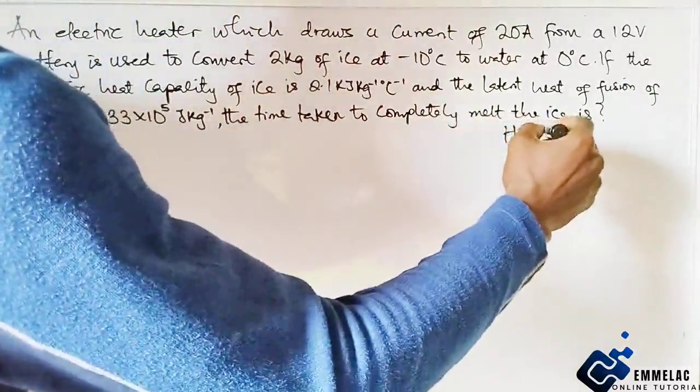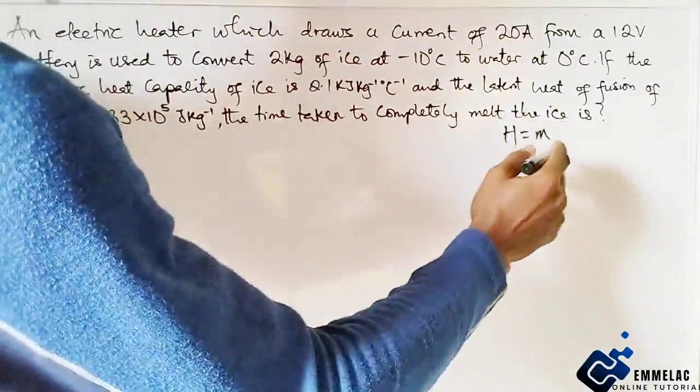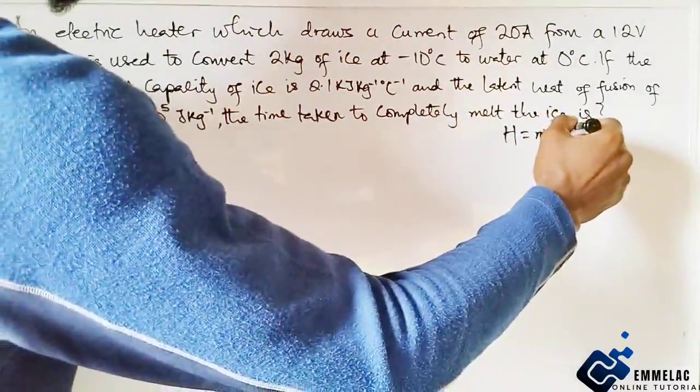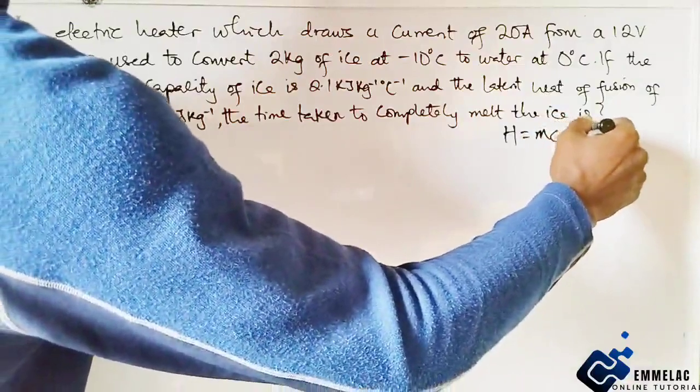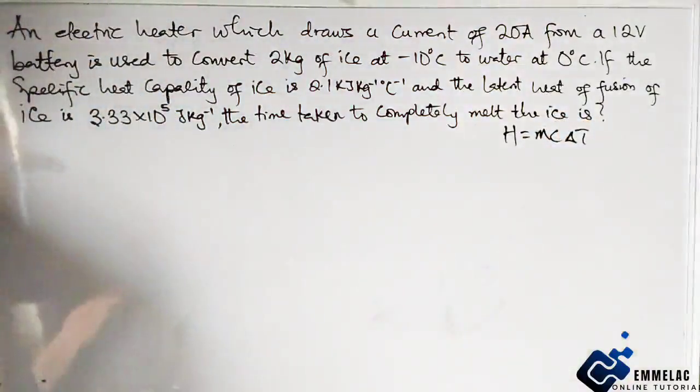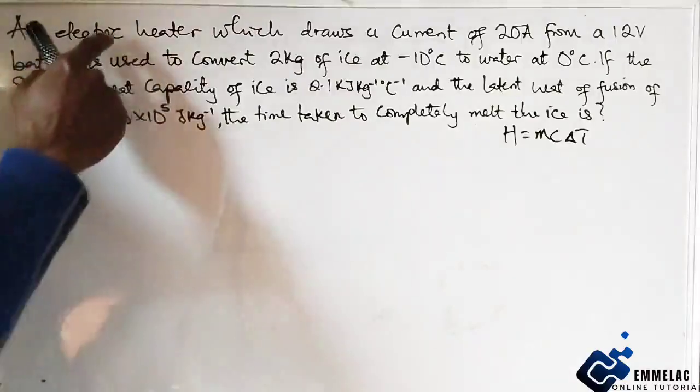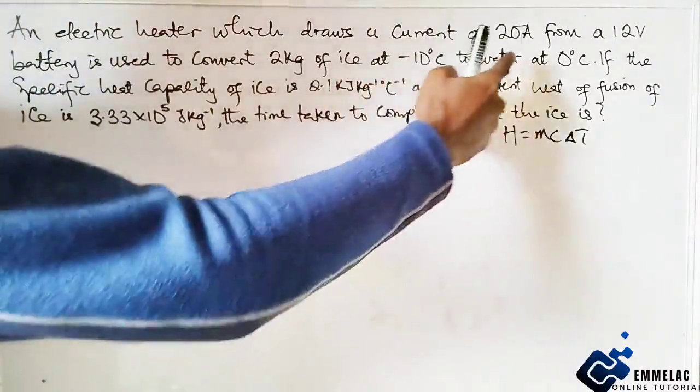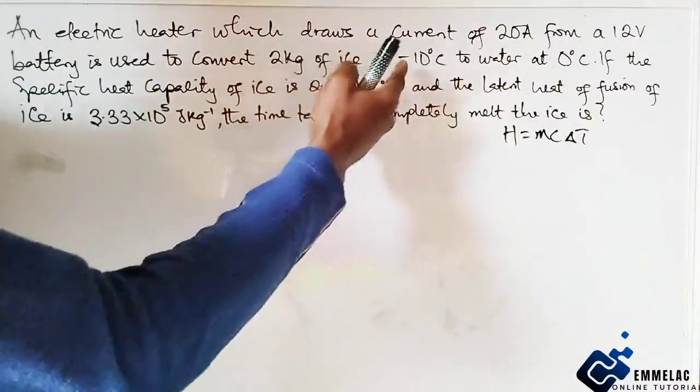Now let us recall that heat equals mass times specific heat capacity times the change in temperature. Also note that heat loss by this electrical heater equals heat gained by the ice to change from minus 10 degrees Celsius to water at 0 degrees Celsius.